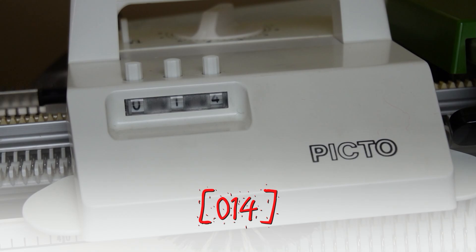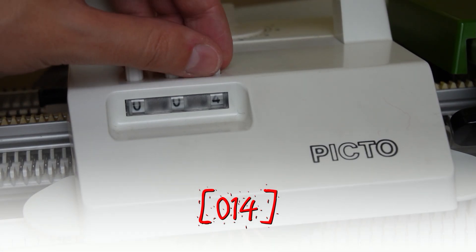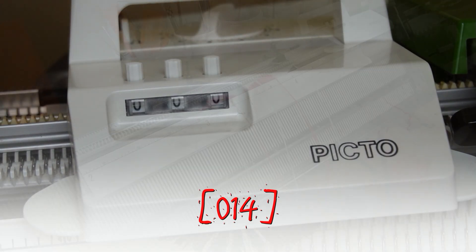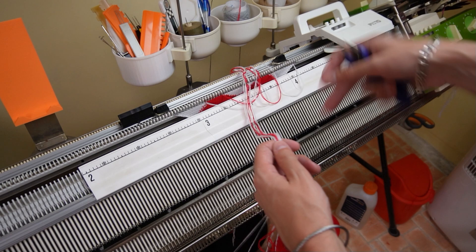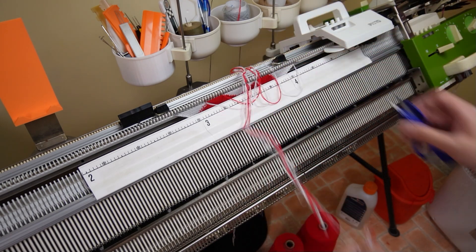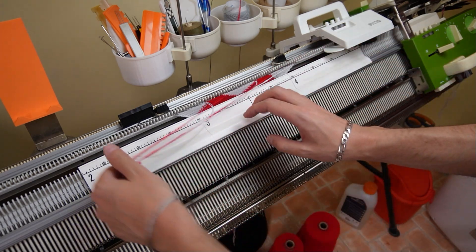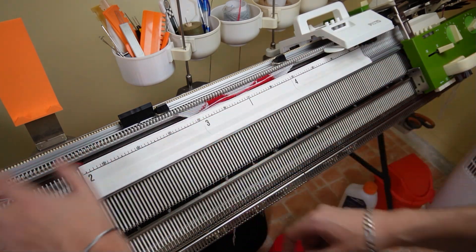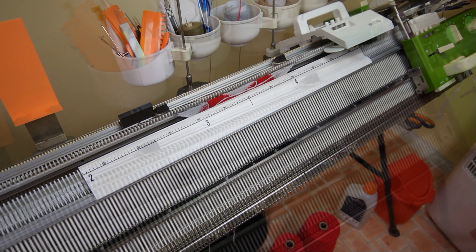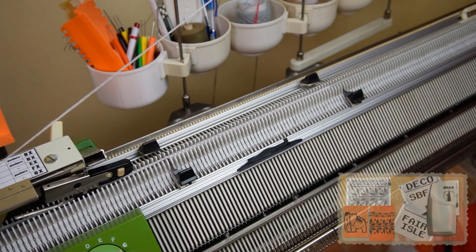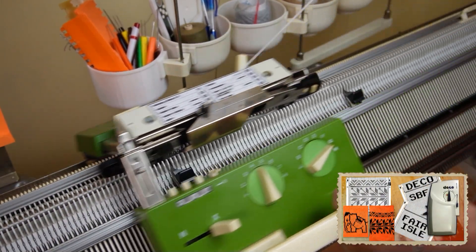Now the row counter is set at 14 rows and the section is complete. At this stage you can cut all yarn strands and continue knitting with the pass-up lock or you can leave the rightmost yarn strand and continue knitting with the picto. I will knit 30 rows to make the border and then I will show you the final result.